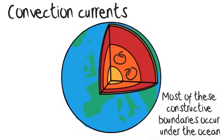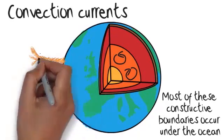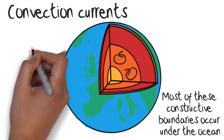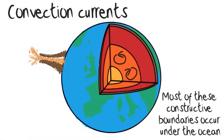Most of these constructive boundaries occur under the ocean, so the magma cools very quickly. Over time, this builds into a massive pile of cooled magma or a volcano. These piles can sometimes be so large that they erupt out of the sea and form islands.